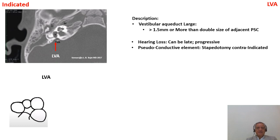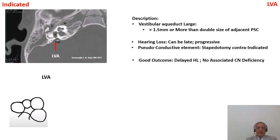In large vestibular aqueduct, hearing loss can be late and progressive. All three conditions — large vestibular aqueduct, IP2, and IP3 — have a pseudo-conductive element (a third-window effect), not a true conductive element, so stapedotomy is contraindicated. The outcome is good because the child may have some hearing initially and there is no associated cochlear nerve deficiency. There is a possibility of ooze or pulsation but not a true gusher. The electrode is normal and any type can be used.